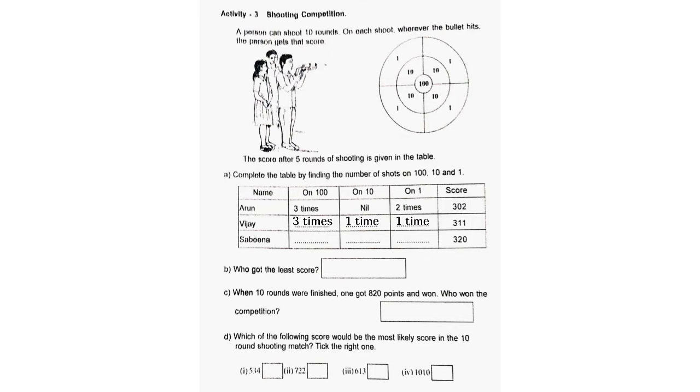Arun: 3 x 100, 0 x 10, 2 x 1 = 302. Vijay: 3 x 100, 1 x 10, 1 x 1 = 311. Sabina: 3 x 100, 2 x 10, 0 x 1 = 320. B. Who got the least score? Arun. C. When 10 rounds were finished, one got 820 points and won. Who won the competition? Sabina. D. Which of the following scores would be most likely in a 10-round shooting match? Options 1, 2, and 3 can be the answers: 534, 722, and 613.